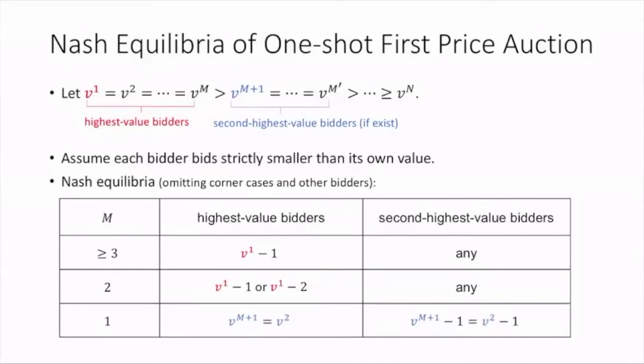There are roughly three cases of Nash equilibrium based on M, which is the number of the highest value bidders. Intuitively, whenever more than one bidder has the highest value, they should compete with each other by bidding V1 minus 1 or V1 minus 2. It is only when M equals 2 and no other bidders can compete that they will bid V1 minus 2. When M equals 1, the unique highest value bidder will compete with the second highest value bidders. So will they converge to one of the Nash equilibria, and how will they converge in these different cases?